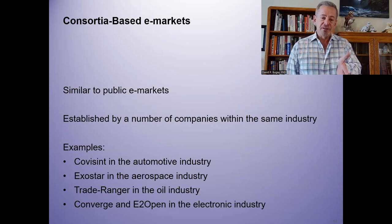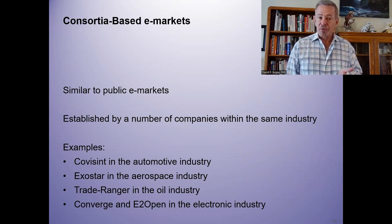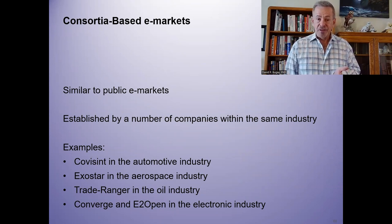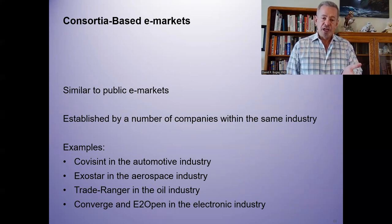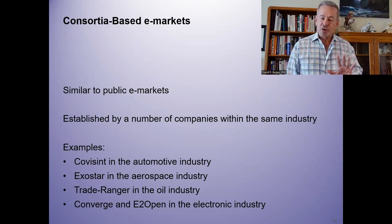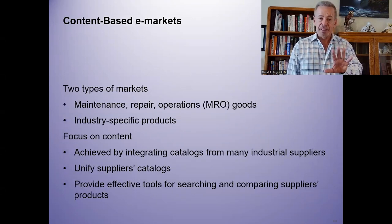Here are four examples of different companies within the same industry. Covisint is an e-market in the automotive industry where you can buy different components. Exostar serves the aerospace industry. Trade Ranger is in the oil industry. These are consortium-based e-markets where a group of companies develop their own platform with different suppliers where you can purchase items online.